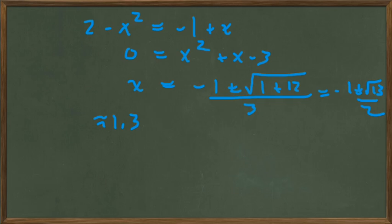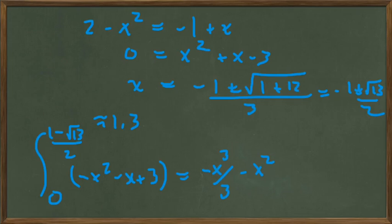And so we're going to calculate this integral now. 0 to minus 1 plus the square root of 13 over 2 of minus x squared minus x plus 3 dx. We integrate those three terms to get minus x cubed over 3 minus x squared over 2 plus 3x, evaluated between 0 and minus 1 plus the square root of 13 over 2. And you see in your text that that comes out to be approximately 2.32.